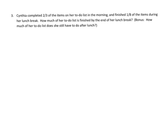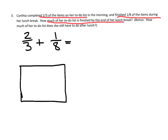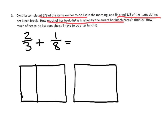Now it's in a word problem. Cynthia completed 2/3 of the items on her to-do list in the morning and finished 1/8 of the items during her lunch break. How much of her to-do list has she finished? So basically we're going to do 2/3 plus 1/8. We're going to start with a unit rectangle and cut this one into 2/3 — shading in 2/3.